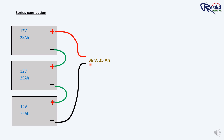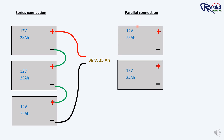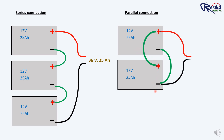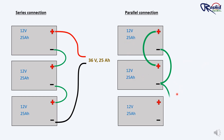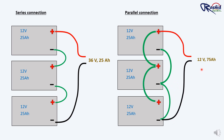Series connection is used when you need higher voltage but don't require increased capacity. In a parallel connection, capacity (AH) adds up but voltage remains the same as a single battery. Two 12V/25AH batteries in parallel: voltage stays 12V, total capacity = 25 + 25 = 50AH. Three batteries in parallel: voltage same, total capacity = 25 + 25 + 25 = 75AH. Parallel connection is used when you need higher capacity (longer run time) but voltage remains the same.